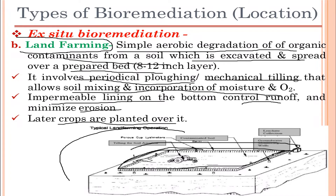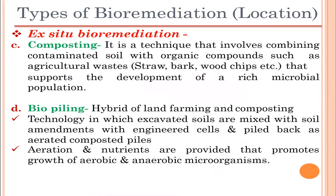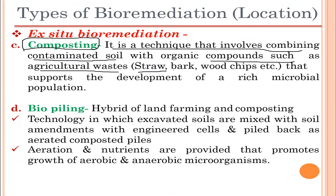After some period of time the soil becomes adequate for cultivation and crops can be grown. Moving on to composting: this is a technique that involves combining contaminated soil with organic compounds such as agricultural waste, straw, bark, or wood chips that support the development of a rich microbial population, leading to degradation of contaminants and increasing the fertility of the soil.